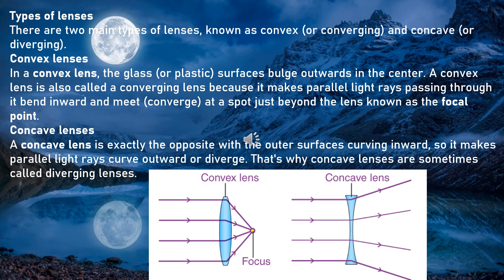Convex lenses are otherwise known as converging lenses. When light falls on a convex lens, it travels from a rarer to a denser medium and undergoes refraction. Instead of traveling straight, the light ray bends. After refraction, the refracted rays meet at a point. So that is why we call it a converging lens.